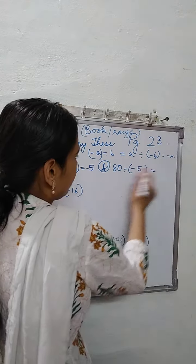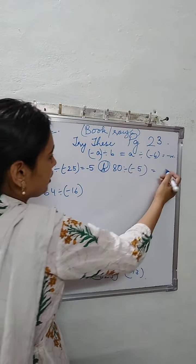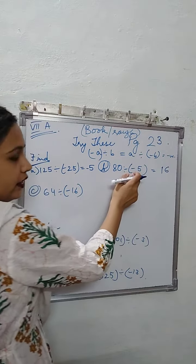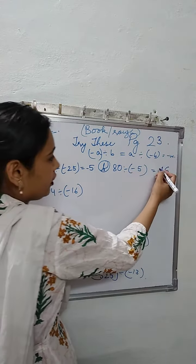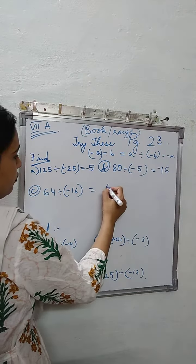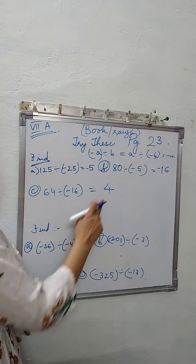The quotient is negative. Similarly, this will be -5. 5 ones are 5, 5 sixes are 30, so -16. The dividend is negative, so answer is negative. 16 fours gives us 64, so answer is 4. If any of the two is negative, answer will be negative.